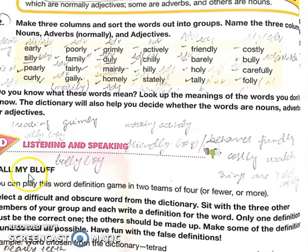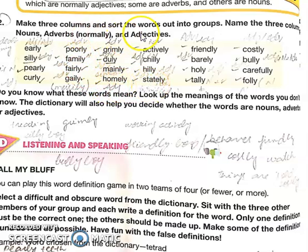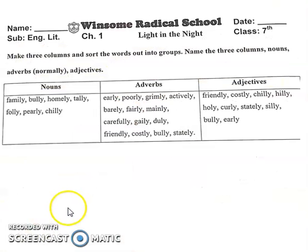بک میں آپ کو یہ exercise اس طرح سے دی گئی ہے۔ آپ نے solve کر کے three columns میں لکھنا ہے، جو کہ ہم اب کریں گے۔ سب سے پہلا column ہم نے nouns کا بنایا ہے، جس میں آتا ہے: family.